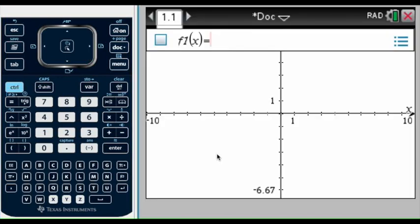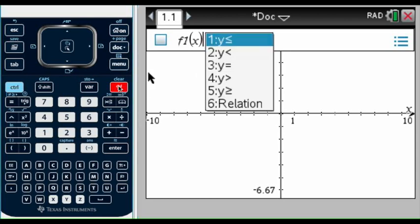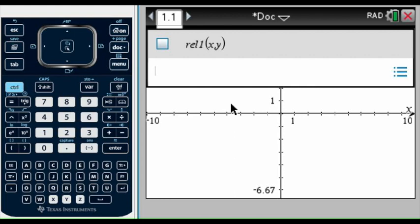Since we're going to use any type, we're not going to put it in f. We're going to delete and go to relation, that way we can type whatever type or kind of linear function that we have.